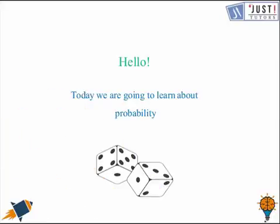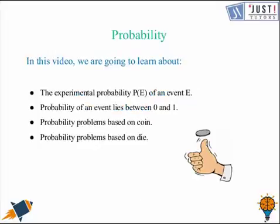Hi, this is Isha. You are watching a video with JustTutors.com. In today's video, we will be learning about probability. In this lesson, we will first cover the experimental probability P(E) of an event E. Then we will see how the probability always lies between 0 and 1. Then we will work with the probability problems based on coin and probability problems based on a die.